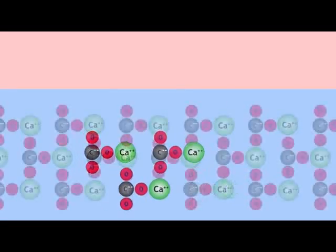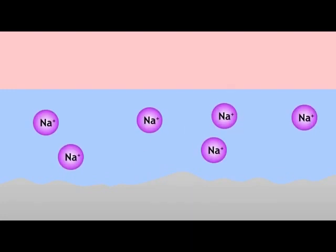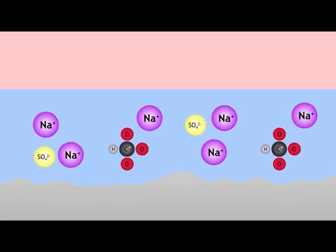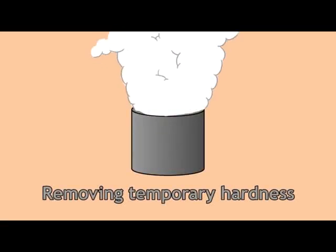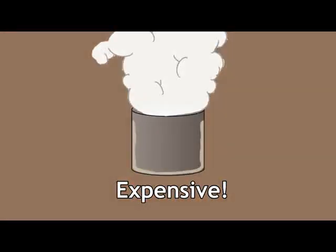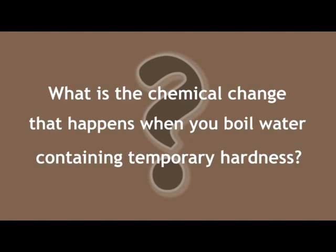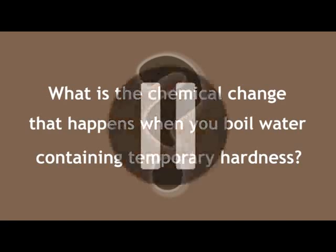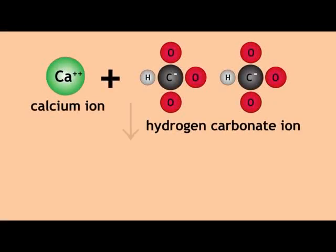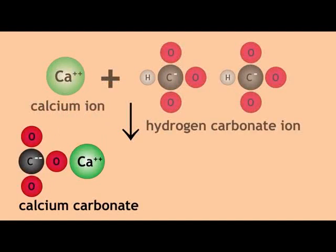Enter washing soda — sodium carbonate — which is much cheaper than soap. When you add the soda, the calcium ions join up with the carbonate ions, forming limestone as a precipitate, leaving water free of the hard ions. Now only the sodium ions remain in solution, balancing the sulfate or hydrogen carbonate that used to be with the calcium. You can remove temporary hardness by boiling the water, but this is expensive and causes lime to deposit on the sides of your container.